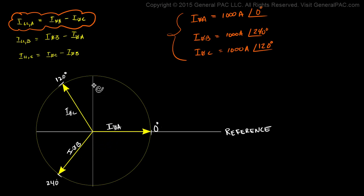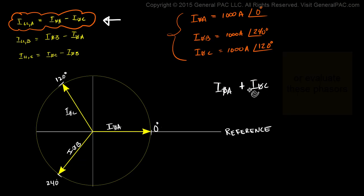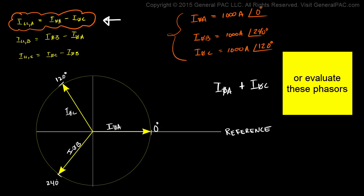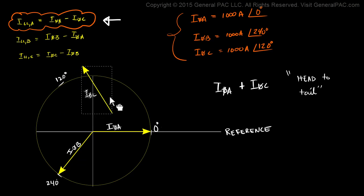We're going to take these phasors and subtract phase A current with phase C current, then look at what our line current A looks like. Here's phase A current and here is phase C current. If we were to perform phase A current plus phase C current, we would do this through what we call a head-to-tail method. We pick up phase C current and add it to the head of phase A current.